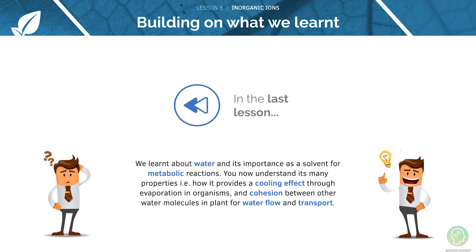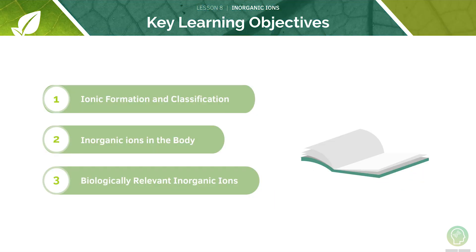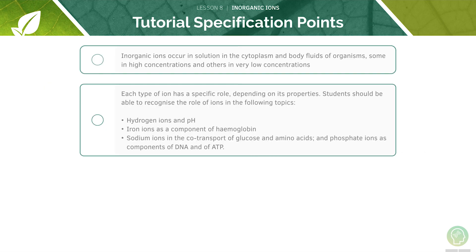In the last lesson we looked at water and its importance as a solvent for reactions. Here are the key learning objectives for today's lesson. First we will look at the formation of ions, ions that can be found in the body and those that are relevant in biology. Here are the AQA specification points we'll cover — feel free to pause the video now and have a quick read through them before we begin.